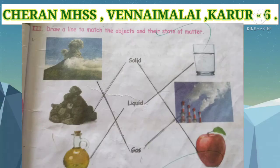Fifth Roman numeral: match the following. Draw a line to match coal and apple with solid state. Draw a line to match oil and water with liquid state. Draw a line to match cloud and smoke with gaseous state.